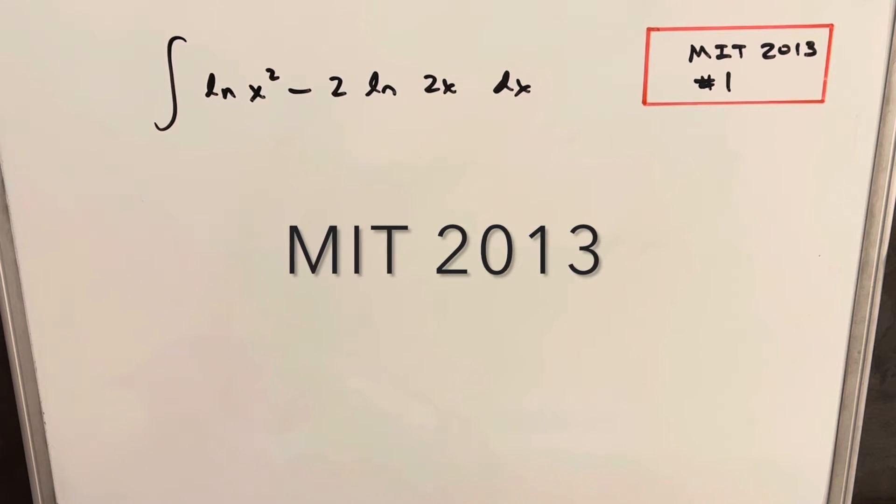Okay, today we're going to be looking at an integral from MIT 2013. This was problem number one. We've got the integral of ln x squared minus 2 ln 2x dx.